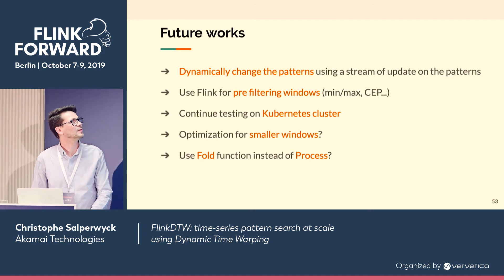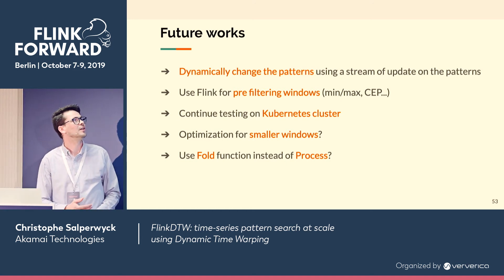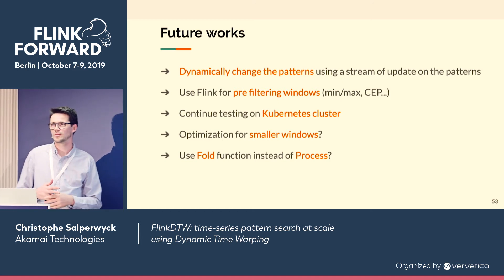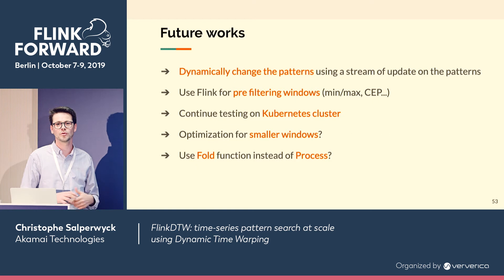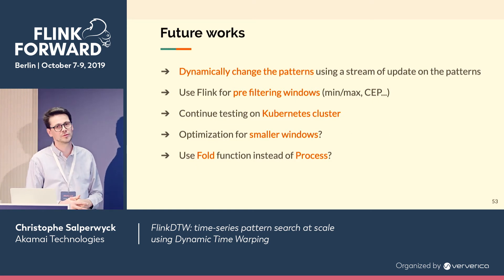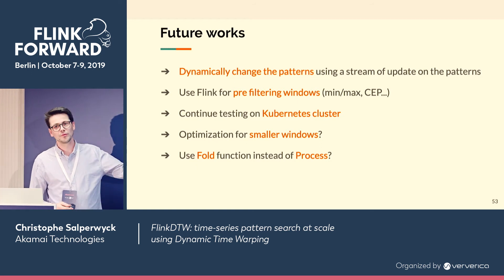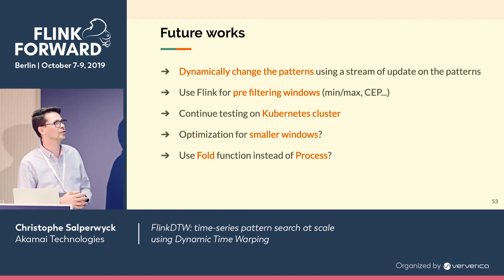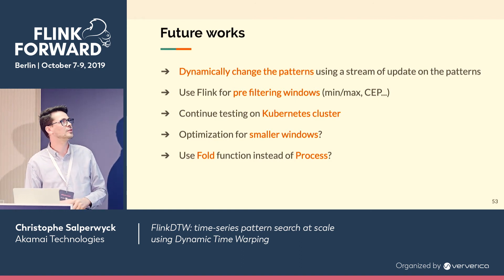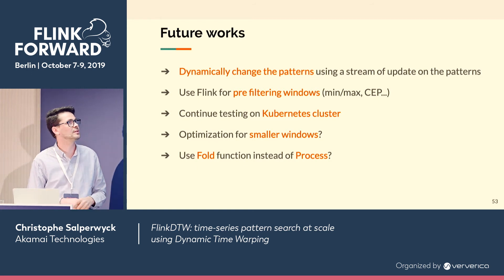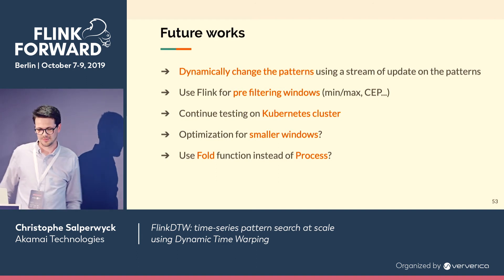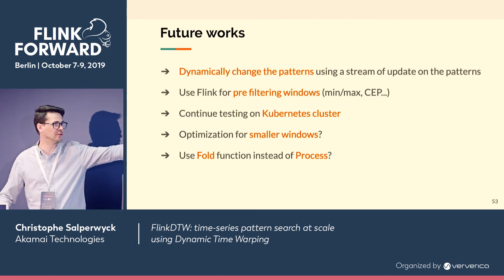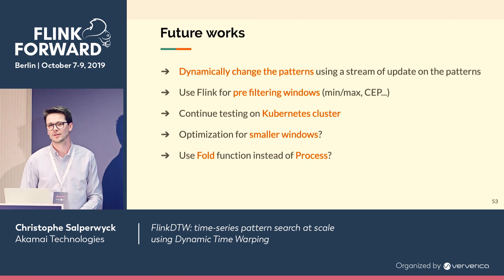Future work: plenty of ideas. In a dynamic environment — like fraud detection where patterns change over time — you might want a stream of patterns that you update, which is very easy to do with Flink. You can also use Flink for all the preprocessing: removing outliers, doing CEP before considering the data. More tests on Kubernetes are needed. One optimization idea is to use a fold function instead of the process function from the streaming API.